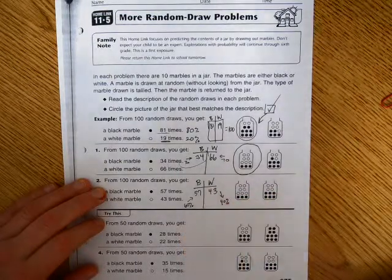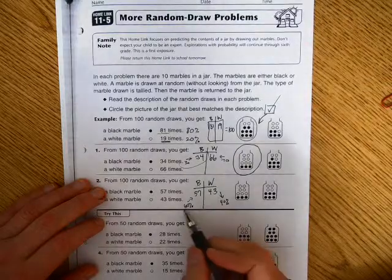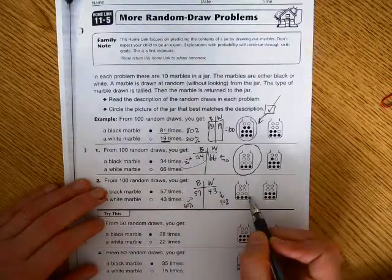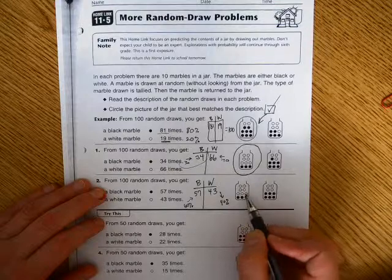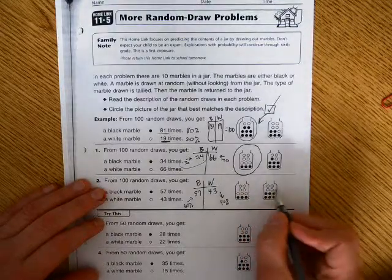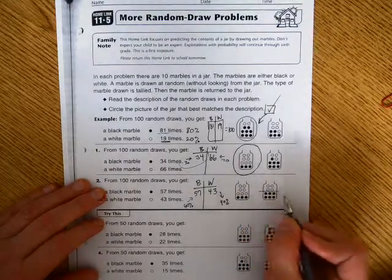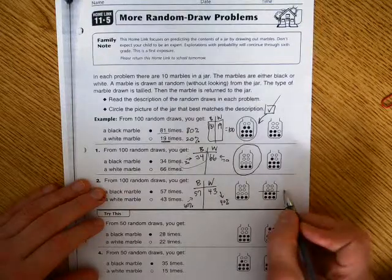So if I look over here, there's 3 black and 7 white, that's about 70%, 30%. But here, there are 4 white marbles and 6 black. This is going to be the correct answer because I would expect,